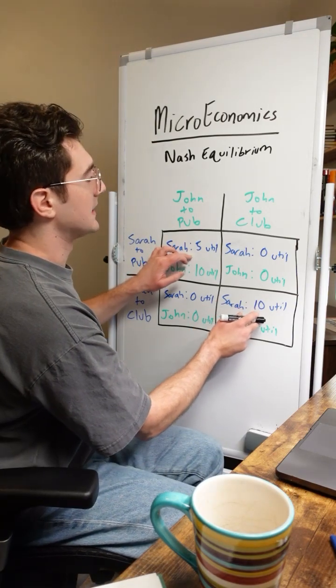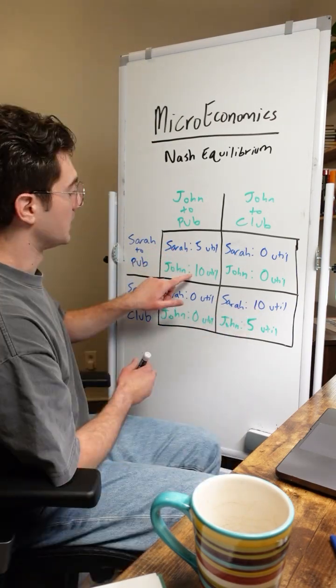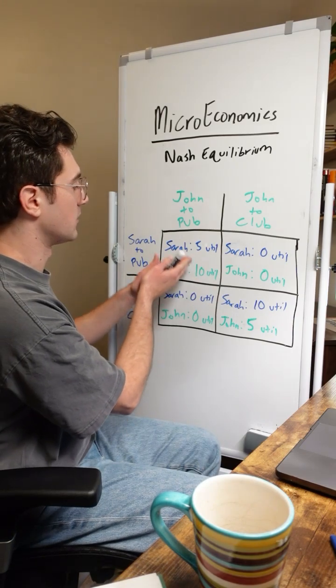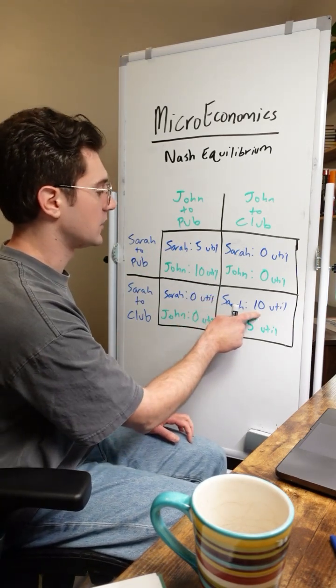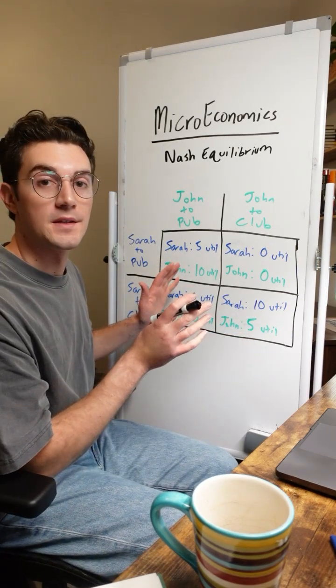So they both have to work together and go to the same place. But John prefers the pub - he achieves 10 utility whereas Sarah only achieves 5. And Sarah prefers the club, so she achieves 10 utility where John only achieves 5.